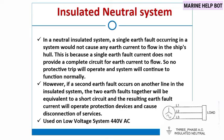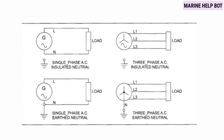This insulated neutral system is used on low voltage systems of 440 volt AC. This is the circuit diagram of the insulated neutral system.